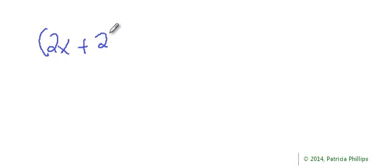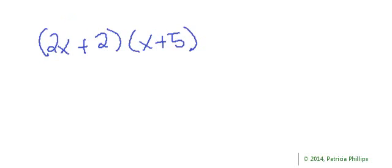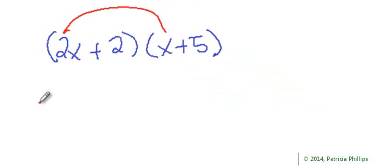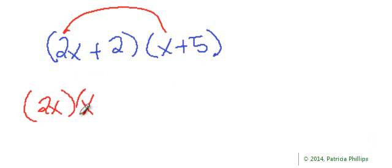Let's do another one: (2x + 2) times (x + 5). These are the first terms of each binomial, so we start there. 2x times x is simply 2x squared.